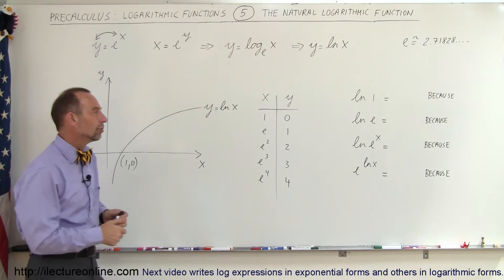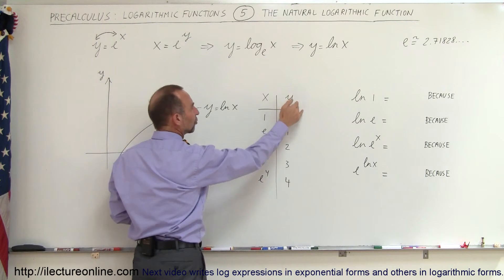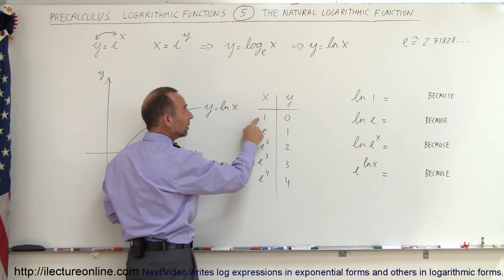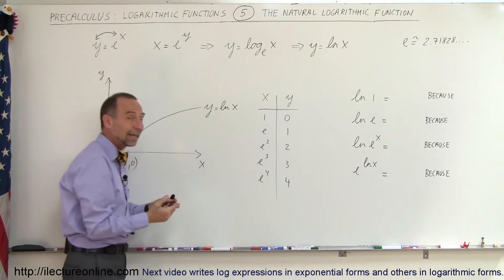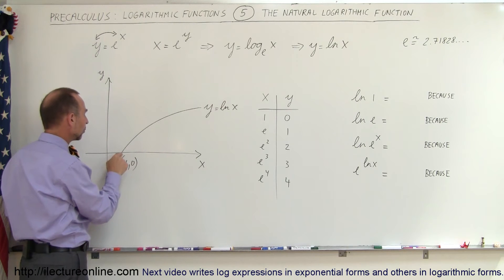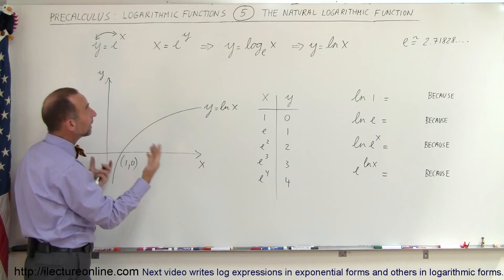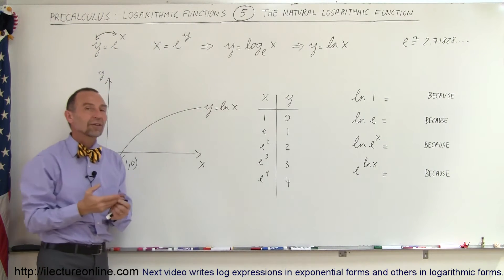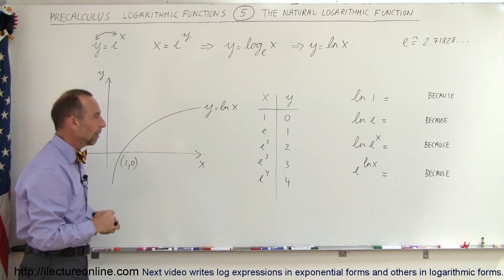Now if we make a table of values for x and then we have the corresponding y, y being the natural log of x, when x is equal to 1, y is equal to 0. And that's the case for all logarithmic functions, because you can see that when x equals 1, y is equal to 0, because e to the 0 power is always equal to 1, or any base to the 0 power is always equal to 1.